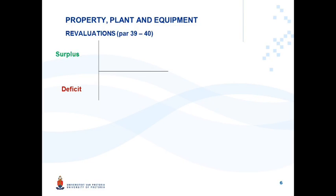To illustrate: when an asset's carrying amount is increased, you have a revaluation surplus. On a first-time revaluation of this asset with an upward movement, you take the surplus through OCI in the statement of profit or loss and other comprehensive income, and accumulate the balance in equity in the statement of changes in equity. That is what you've been doing from a first-year perspective.